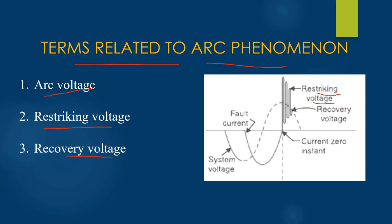The third term is recovery voltage. As you can see in the figure, the dotted line represents the recovery voltage. It is the normal frequency RMS voltage that appears across the contacts of the circuit breaker after the final arc extinction. It is generally approximately equal to the system voltage, and therefore you can see that the dotted lines basically represent your system voltage.